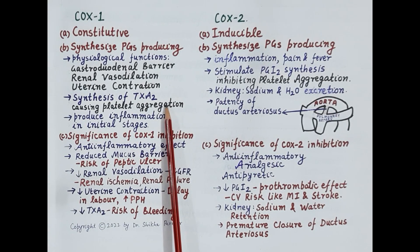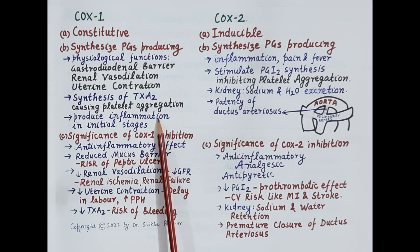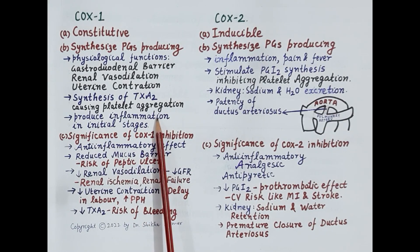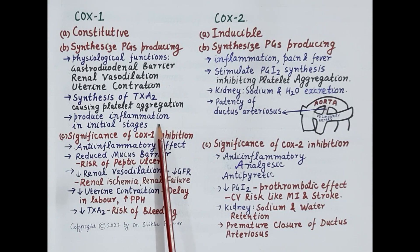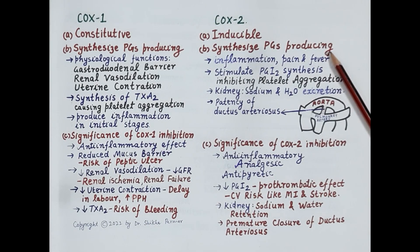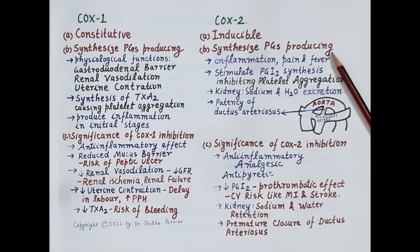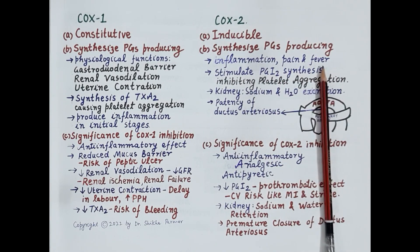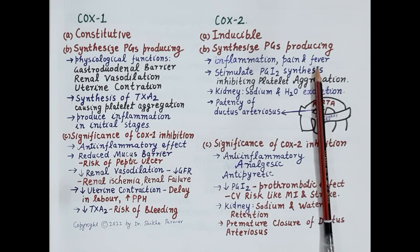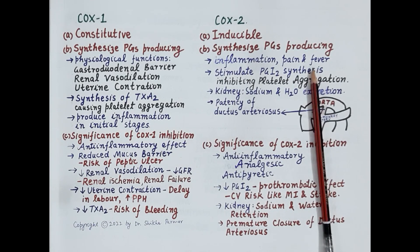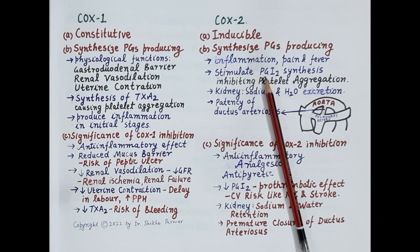Importantly, COX-1 produces prostaglandins primarily responsible for protective functions, but in small amounts COX-1 also produces prostaglandins that cause inflammation during the initial stages of tissue injury. So COX-1 also causes inflammation, but only during the initial stages. COX-2, on the other hand, mediates synthesis of prostaglandins producing inflammation, pain, and fever — these prostaglandins are the major culprits.